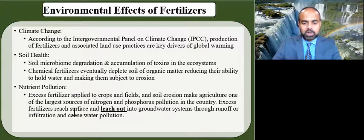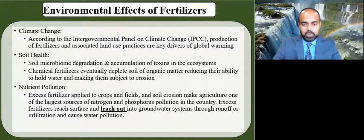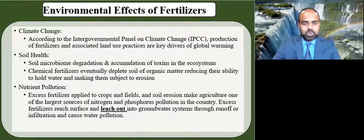Excess fertilizer applied to crops and fields — which happens very often — leads to soil erosion, making agriculture a major source of nitrogen and phosphorus pollution. Only a fraction of nitrogen-based fertilizers are converted to plant matter; the rest runs off or absorbs into the soil and eventually into groundwater. The remainder accumulates as nitrate, which is highly water-soluble, and when there is rainfall, it runs off into oceans, rivers, and lakes, leading to groundwater and waterway pollution.